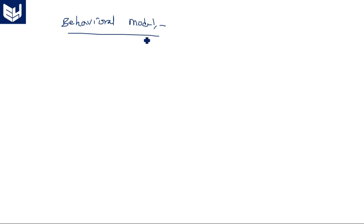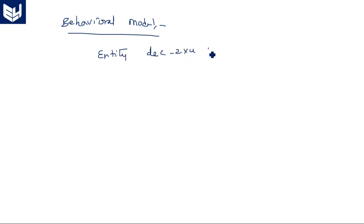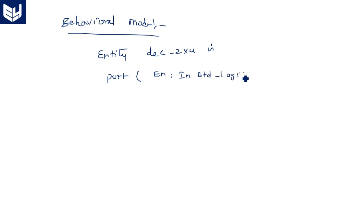In the behavioral model we write the code based on the truth table using conditional statements and process statements. The entity part is common for any style — whether behavioral or dataflow. Entity decoder_224 is port: enable in std_logic.